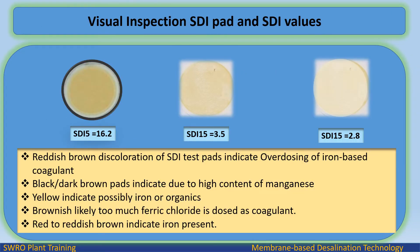SDI filter pad tests can be analyzed to determine the nature of the deposit. Visual inspection: reddish-brown discoloration of SDI test pads indicates overdosing of iron-based coagulant; black or dark brown pads indicate high content of manganese; yellow indicates possibly iron or organics; brownish likely indicates too much ferric chloride dosed as coagulant; red to reddish-brown indicates iron present.